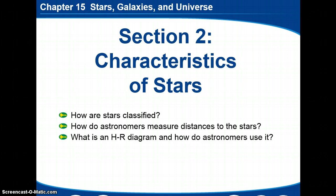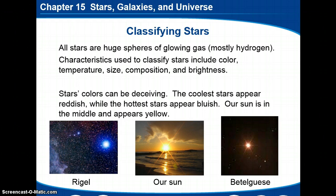So starting off with classifying stars, the first thing you want to look at is the color. All stars are huge spheres of glowing gas, mostly hydrogen as we talked about, and the color is kind of deceiving when it comes to stars. When we look at the cooler stars, we would think that cool colors for us are usually blues, and it's actually the opposite. It turns out that the hottest stars are blue and the coolest stars are red. Our Sun, which is kind of an average size, is yellow, so it's kind of in between the two.